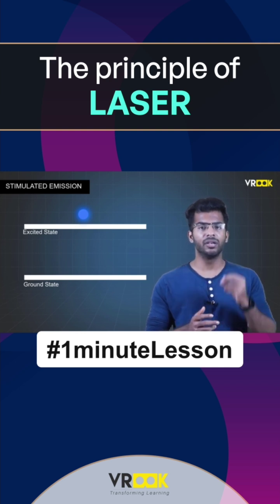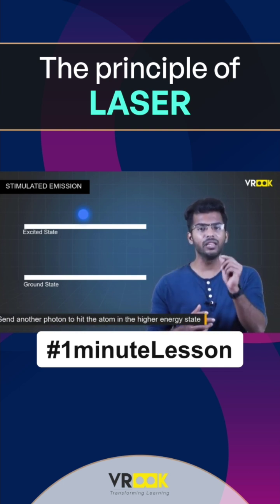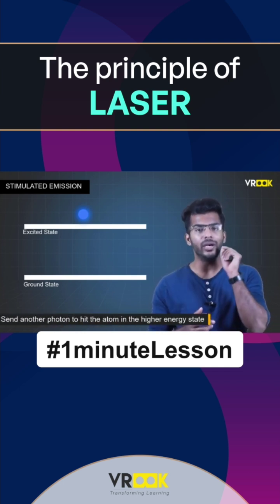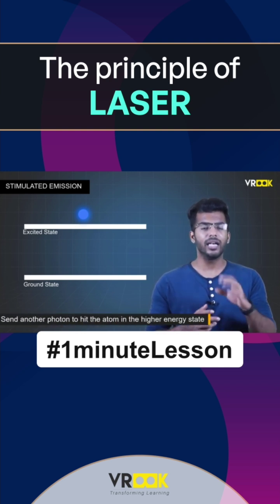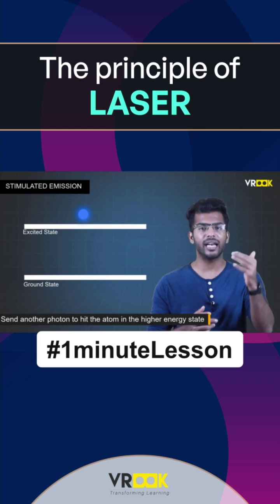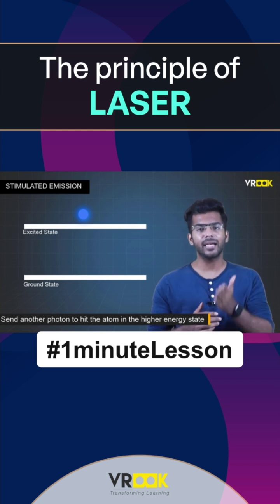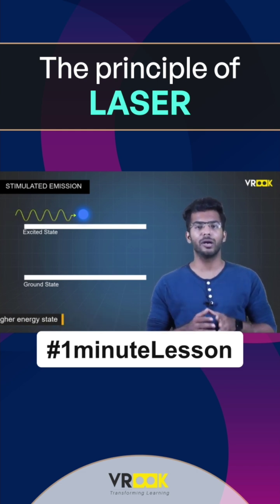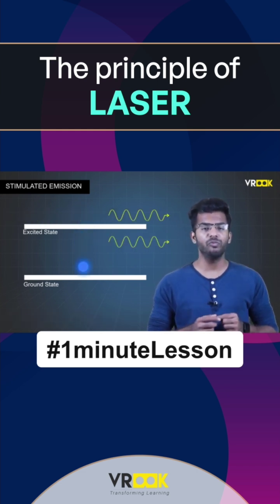In stimulated emission, we will send another photon to hit the atom in a higher energy state and make it come back to the ground state. The atom will release the photon.